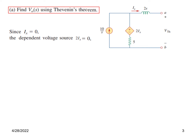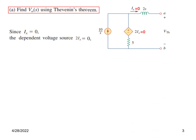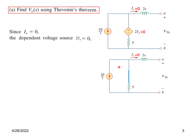Notice carefully that the current ix does not have any path to complete, therefore ix equals 0. Since the dependent voltage source 2ix depends on ix, it is also equal to 0, so we can eliminate both. Our simplified circuit now allows us to find V_Thevenin as the voltage across the 5-ohm resistor: current multiplied by 5 gives 50 over S, so V_Thevenin equals 50 over S.